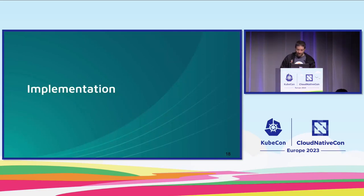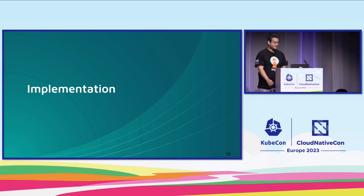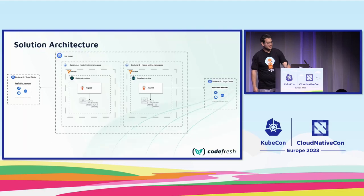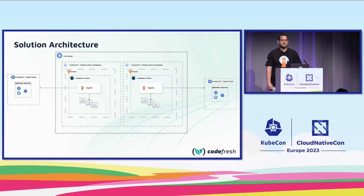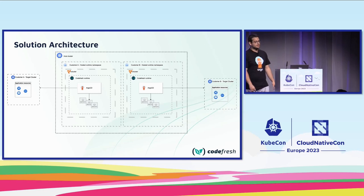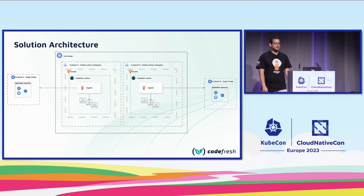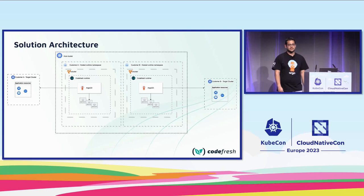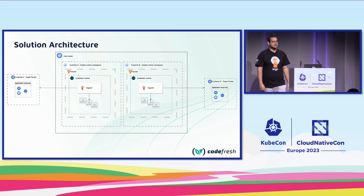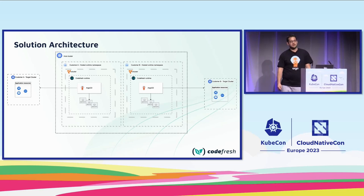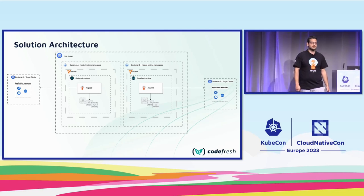Now Ilia will talk about the implementation. Let's look at the solution architecture from above. We have our host cluster. Inside the host cluster, we deploy a namespace for each customer. Inside that namespace, we deploy vCluster, and onto the vCluster we deploy the virtual Argo CD. The customer then connects their own target clusters, and Argo CD syncs the resources onto their clusters.